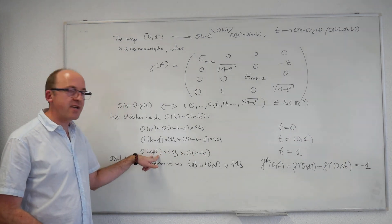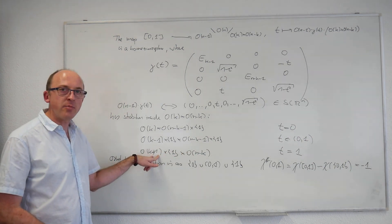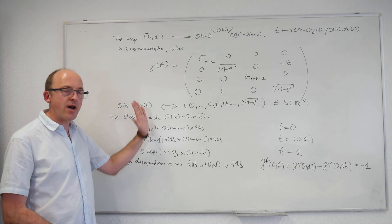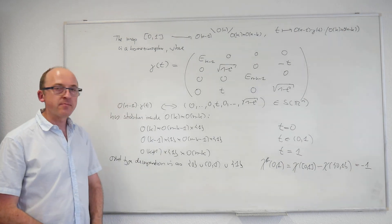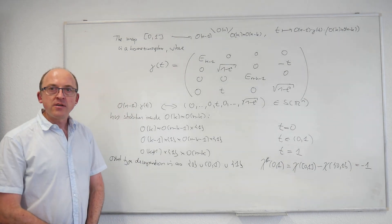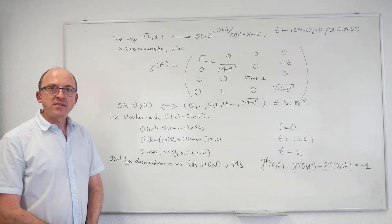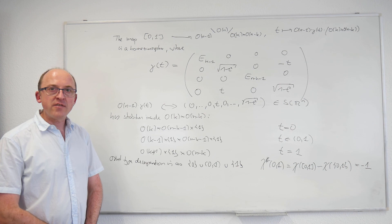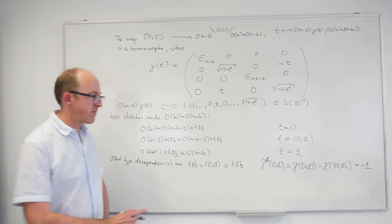This completes the proof of the double coset formula relevant for the splitting in the case of the orthogonal groups.